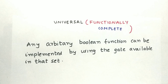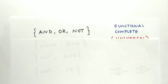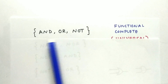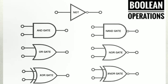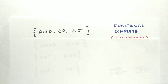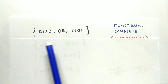What does it mean? Let's say we have a set containing AND, OR, and NOT gates. By using the gates inside this set, we are able to perform any operation we want — NOT, OR, AND, and NAND operations. Since we can achieve all the boolean operations using these gates, this set is called a functionally complete set.